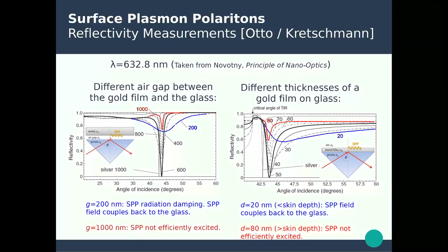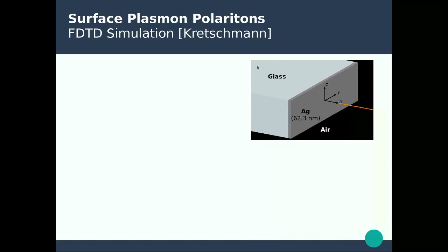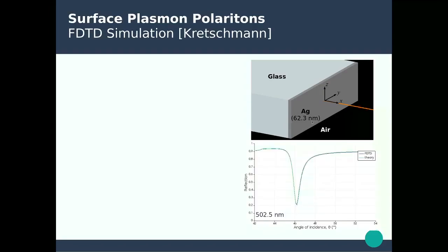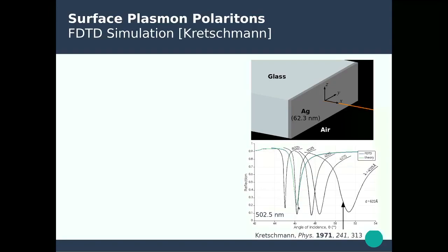Now let's look at some numerical simulations done using FDTD. This simulation models the Kretschmann configuration with a glass substrate modeling the glass prism, a silver metallic film of 62.3 nm thickness, and we calculate the reflection spectrum. For an excitation wavelength of 502.5 nm, we observe a very large dip at about 46 degrees in the angle-resolved reflectivity. We compare these calculations with experiments performed by Kretschmann in 1971 using different wavelengths, and at 502.5 nm we obtain exactly the same angle at which the SPPs are formed.